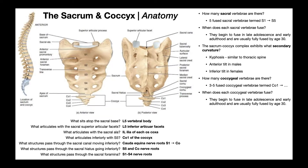Now for some more anatomical questions. What structure sits atop the sacral base? Looking at the anterior view of the sacrum, the sacral base is a platform on which the vertebral body of L5 sits. You can see the sacral base more clearly from an anterior view.